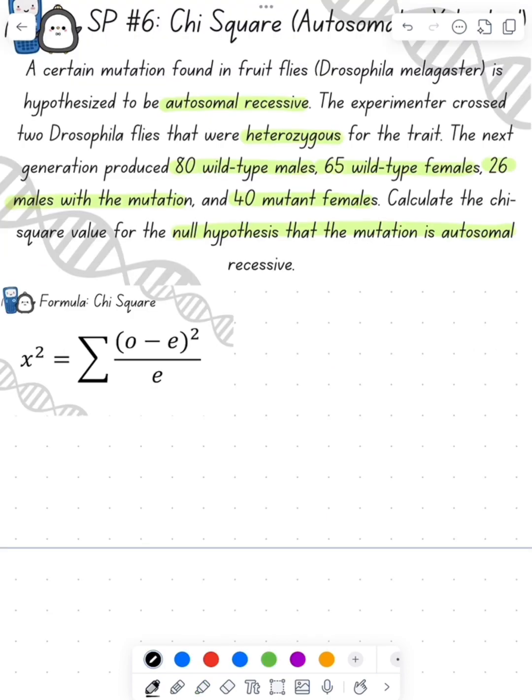We want to test the null hypothesis that the mutation is autosomal. Since we don't really care about the sex of them, we're going to add together the males and the females. So there's 80 wild-type males and 65 wild-type females, which gives us 145 wild-type flies.